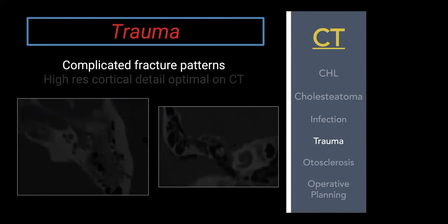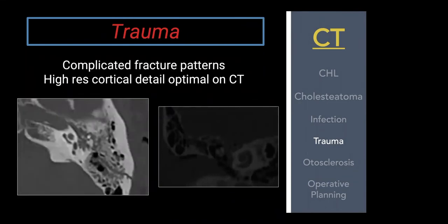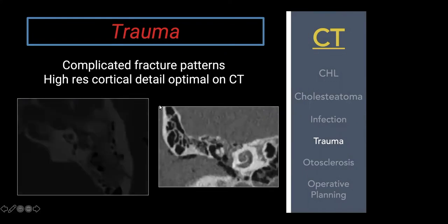Trauma is self-explanatory for CT — fracture patterns are often complicated, and the high-resolution cortical detail that CT provides is optimal. On the left, you can see a fracture breaking through the mastoid cortex propagating into the middle ear, with too much space between the malleus and incus — a malleoincudal disassociation. The same finding is seen on a coronal CT: patchy fluid and an abnormally wide malleoincudal joint, indicating another traumatic disassociation.